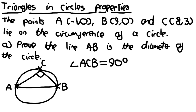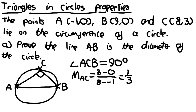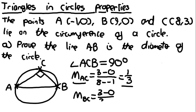We know A, B and C, so we can find the gradient of line AC, which is going to be (3 − 0) / (8 − (−1)), which equals 1/3. That is the gradient of AC. The gradient of BC is (3 − 0) / (8 − 9), which equals −3. As we can see, these two gradients are negative reciprocals of each other.